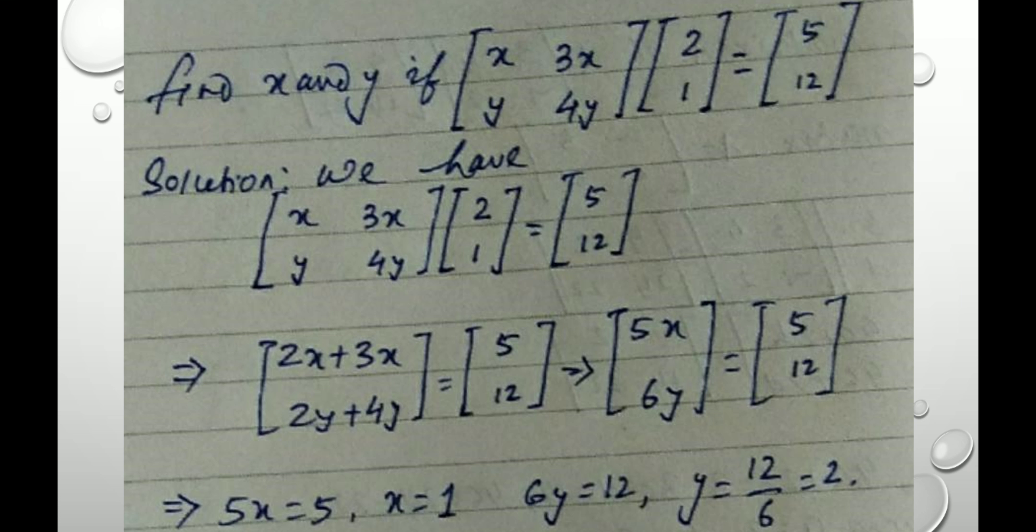We have X, 3X, Y, 4Y whole into 2, 1. Matrix multiplication, that's equal to 5, 12. Then, it gives 2X plus 3X, 2Y plus 4Y is equal to 5, 12. This implies 5X, 6Y is equal to 5, 12. 5X is equal to 5, X is equal to 1. Therefore, the value of X is 1. 6Y is equal to 12, Y equal to 2. Hence, finally, the value of X is 1, and that of Y is 2.